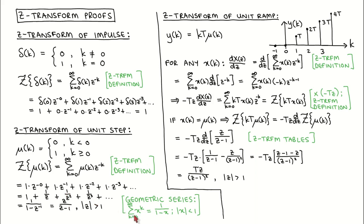We now apply the formula for the geometric series where X is equal to 1 over Z, which gives us this expression. When we multiply the numerator and denominator by Z, we get the Z-Transform of the unit step as Z divided by Z minus 1. The geometric series only converges in the region where the magnitude of Z is greater than 1.